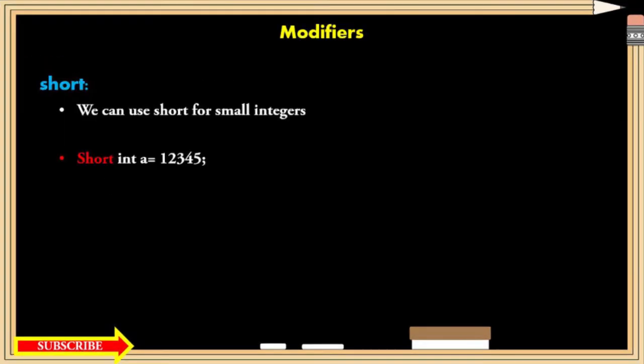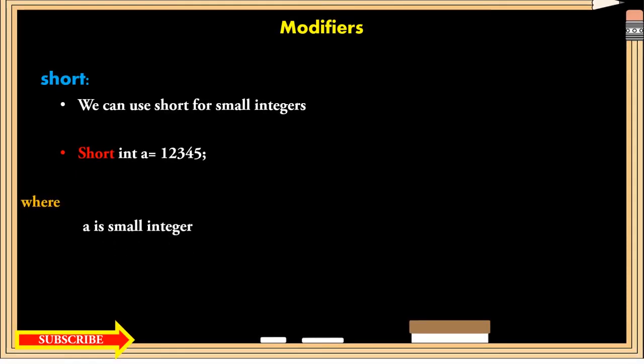Short modifier. Actually, the short is used to store small integer values. Consider a scenario where you have 4 bytes of int data type but you want to store only 2 bytes of data in it. Then you can make use of short modifier in front of your int data type. Then it will reduce it to 2 bytes of data.